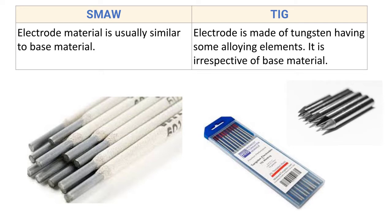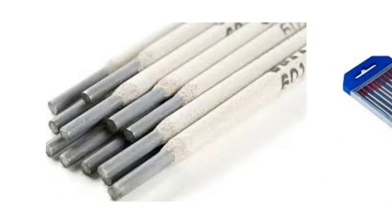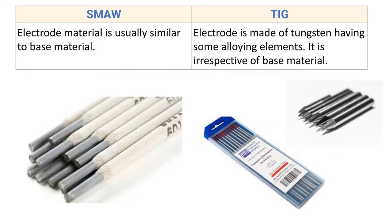Next difference: for SMAW, the electrode material is usually similar to the base metal. Here you can see the electrodes used in a shielded metal arc welding process. The composition of the electrode is generally kept similar to the base metal, which is why SMAW electrodes are widely available in the market.